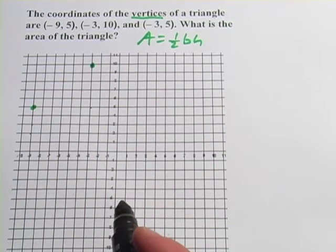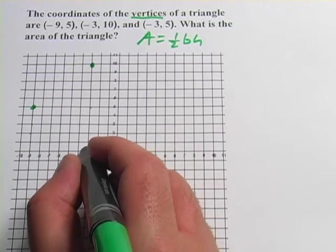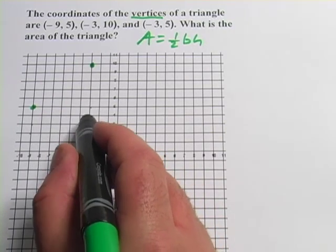Okay, and then we've got negative 3, 5. So 1, 2, 3, and up to 5, 1, 2, 3, 4, 5.